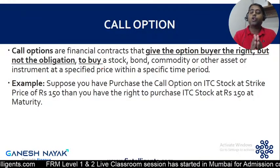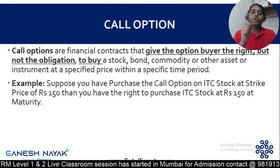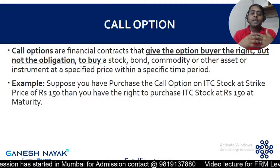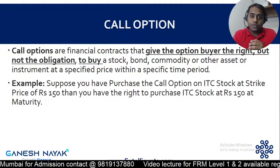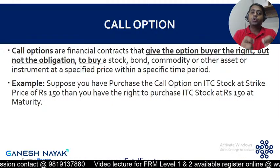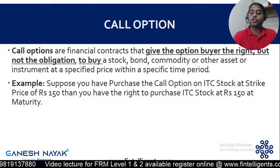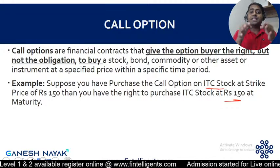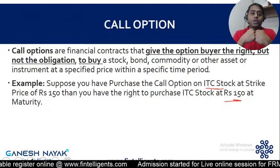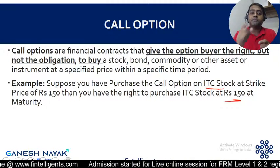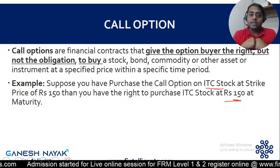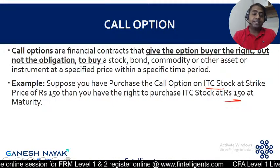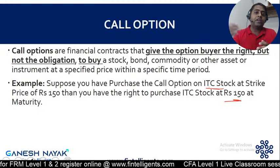A call option gives you the right — but not the obligation — to purchase something at a fixed strike price. For example, suppose there's a call option on ITC stock with a strike price of 150. When you purchase this option, you pay a call premium to get that right. If the stock price of ITC goes above 150, say to 200 or 300, you have the right to purchase it at 150.